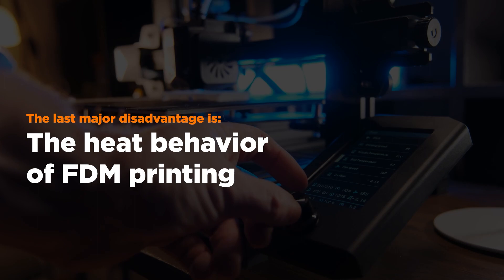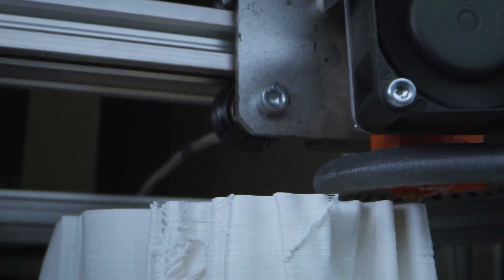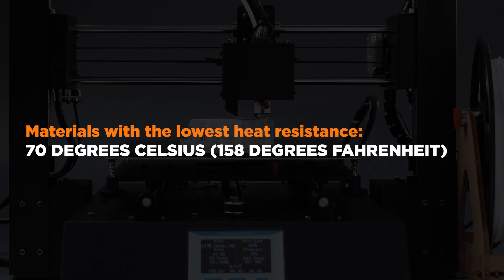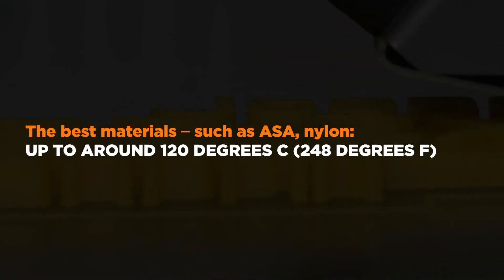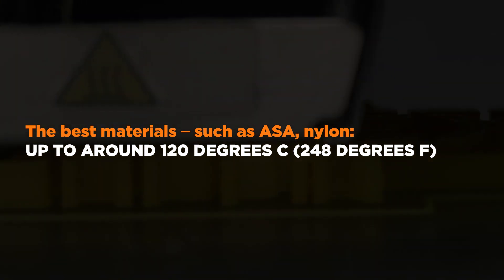The last major disadvantage is the heat behavior of FDM printing. All materials used have to be easy to fuse through the print head, which means they need a rather low heat resistance. Materials with the lowest heat resistance can have issues at temperatures as low as 70 degrees Celsius or 158 degrees Fahrenheit. The best materials, such as ASA and nylon, can go up to 120 degrees Celsius or 248 degrees Fahrenheit, but rarely higher. This means FDM printed parts are not appropriate for specifically hot environments — even leaving them in the sun during a heat wave can start warping them. Keep in mind that the temperature inside a car on a sunny day can climb very quickly.